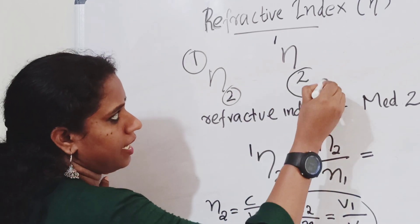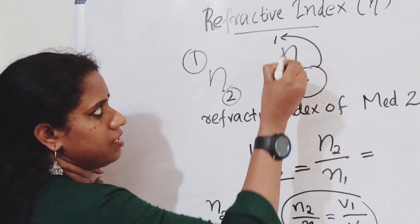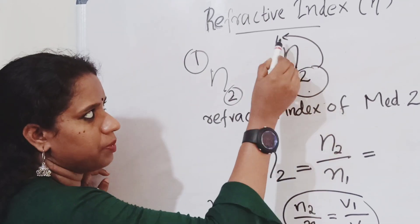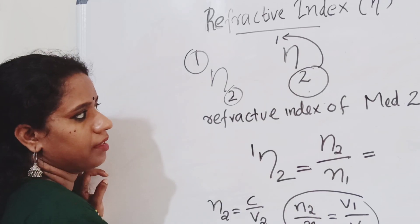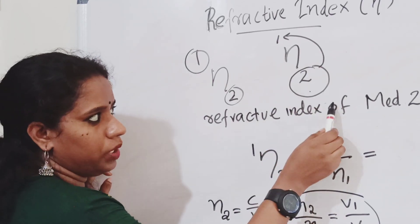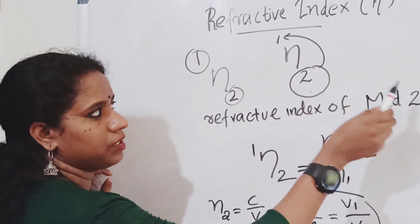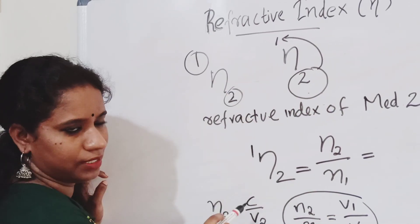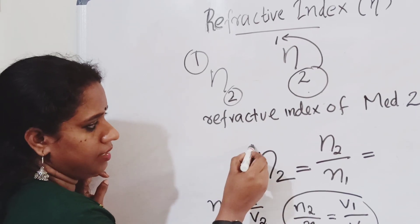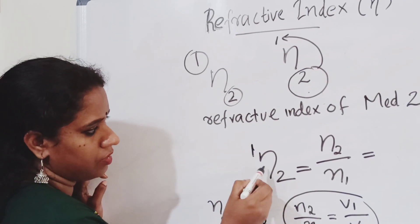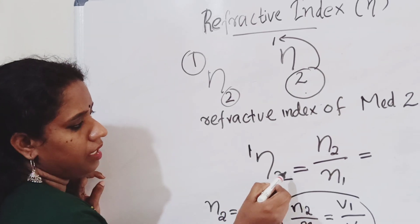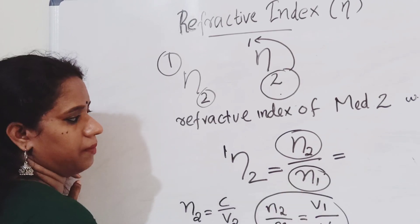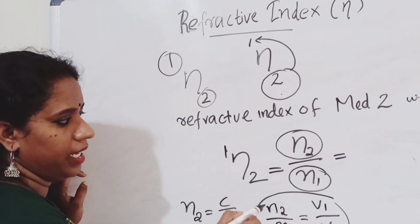The refractive index of the second medium with respect to the first medium — written as N2 with respect to N1 — is the refractive index of the second medium divided by the refractive index of the first medium.